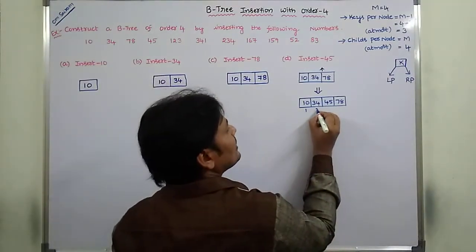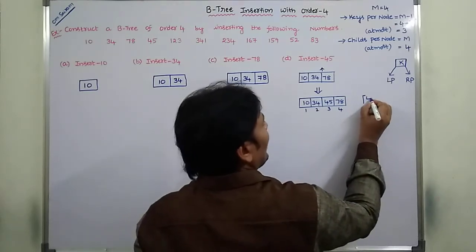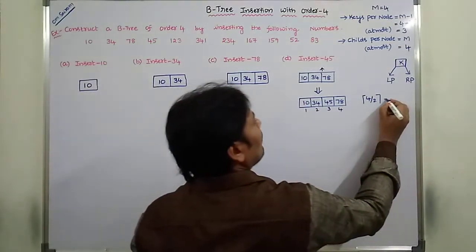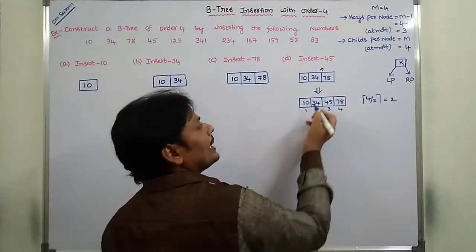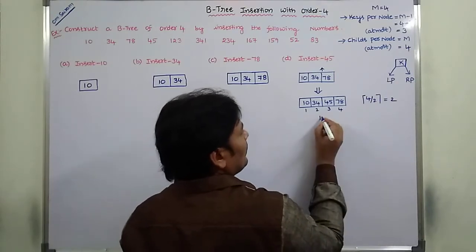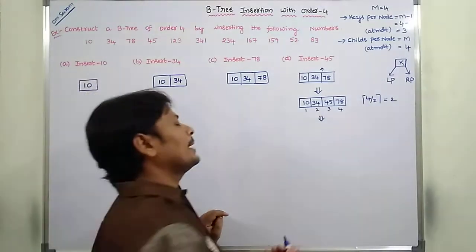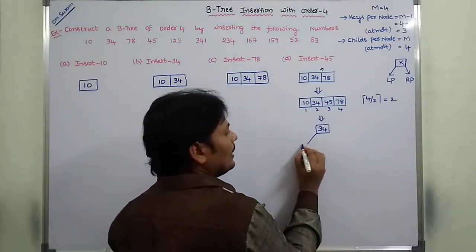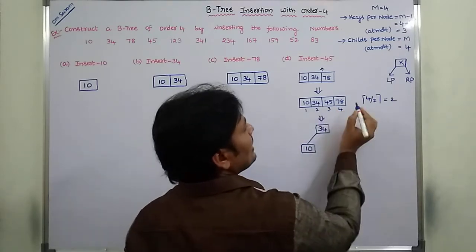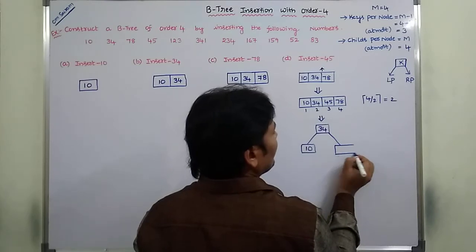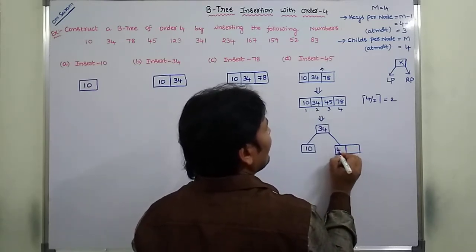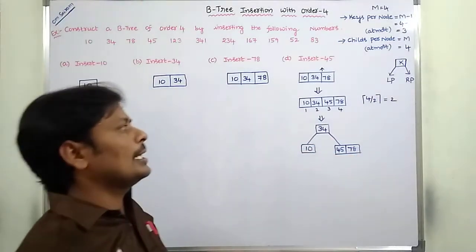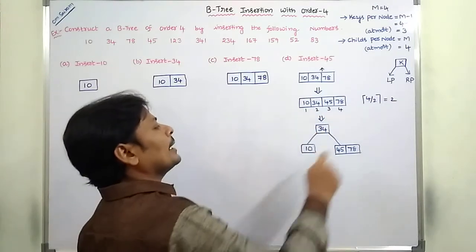There are 4 key elements, so we perform splitting at the middle element. The middle element is at position 4 divided by 2, which is the 2nd element — that is 34. So 34 becomes the parent node. The left child of 34 is 10, and the right child of 34 contains 45 and 78. Elements before 34 go left; elements after 34 go right.